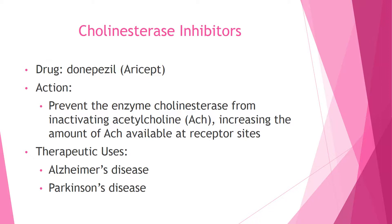The first group of medications are the cholinesterase inhibitors. The drug donepezil, brand name Aricept, works by preventing the enzyme cholinesterase from inactivating acetylcholine, which increases the amount of acetylcholine available at receptor sites. This can be used for Alzheimer's disease and Parkinson's, though it's more commonly seen used with Alzheimer's disease.